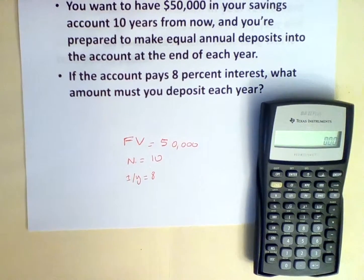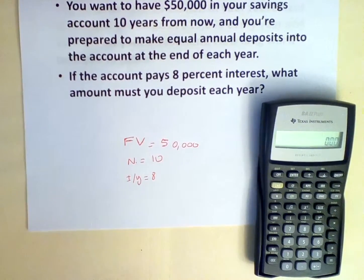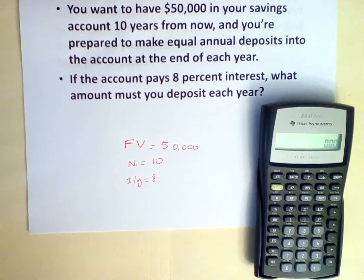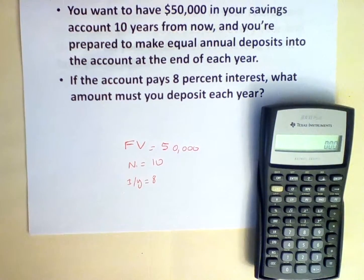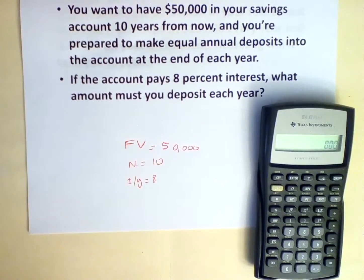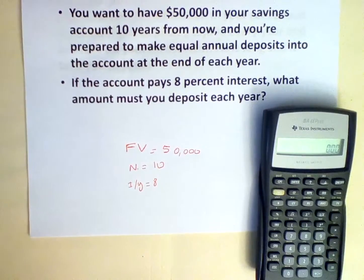This is an annuity problem and because we have payments at the end of the year, this is an ordinary annuity. To determine the amount to deposit, we use the payment or PMT function in the financial calculator.